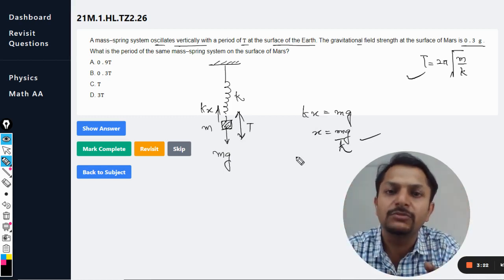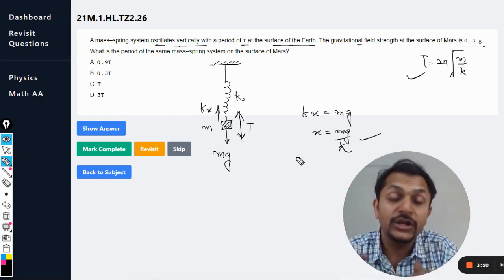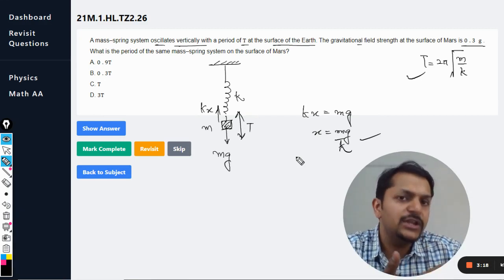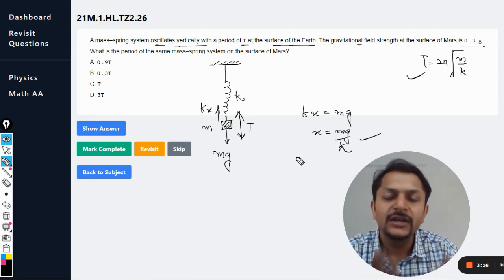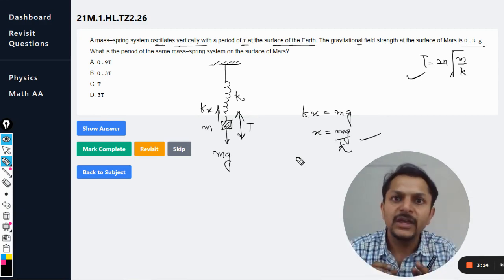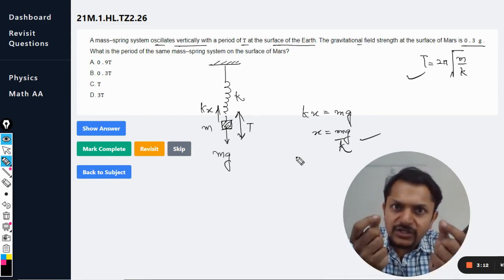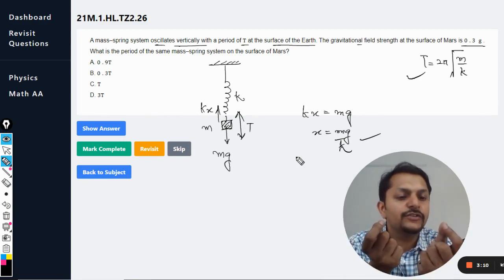We are still not talking about the simple harmonic motion. We are only talking about the new equilibrium position that is created by the mass-spring system. So it means that there was a mean position there. This is the mean position for the horizontal.